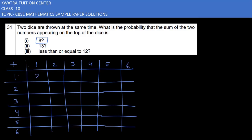1 plus 1 is 2. If 1 and 1 comes on our dice, it will give the result 2. 1 and 2 will be 3, 1 and 3 will be 4, 1 and 4 will be 5, 1 and 5 will be 6, 1 and 6 will be 7. Then 2 and 1 will be 3, 2 and 2 will be 4, 2 and 3 will be 5, 2 and 4 will be 6, 2 and 5 will be 7, 2 and 6 will be 8.